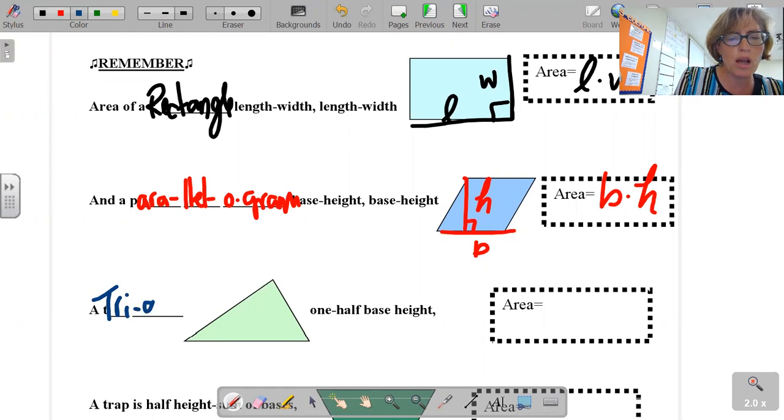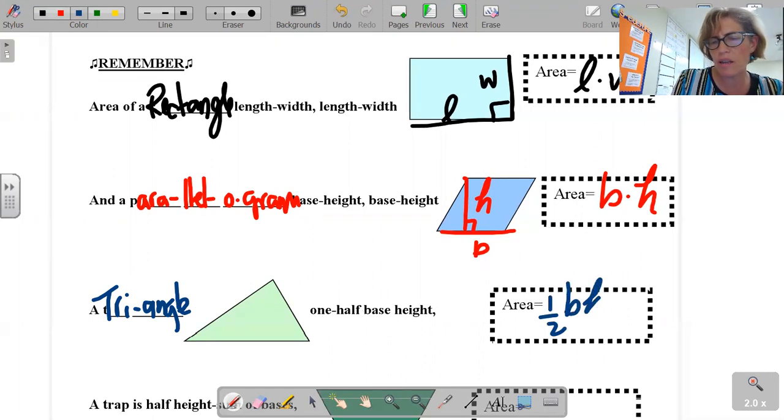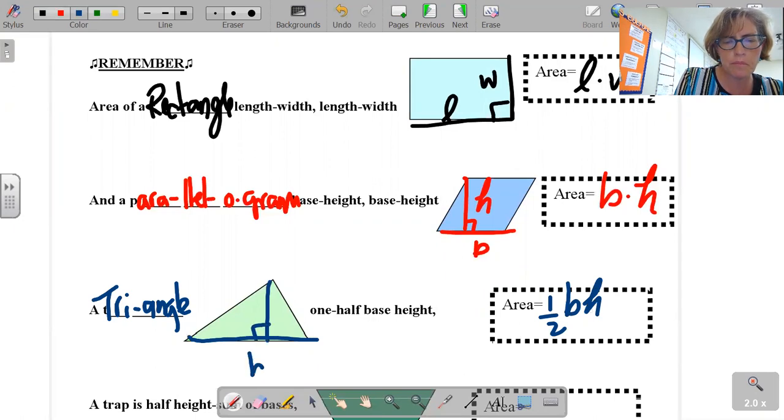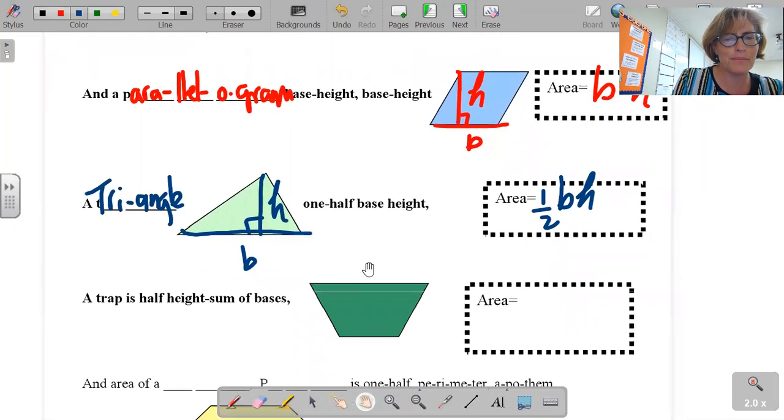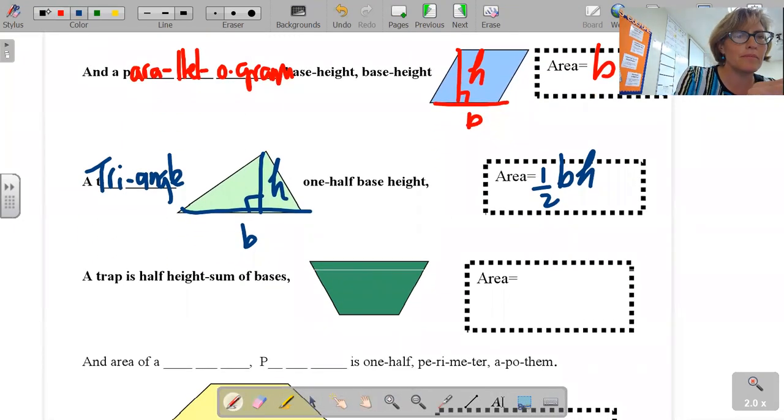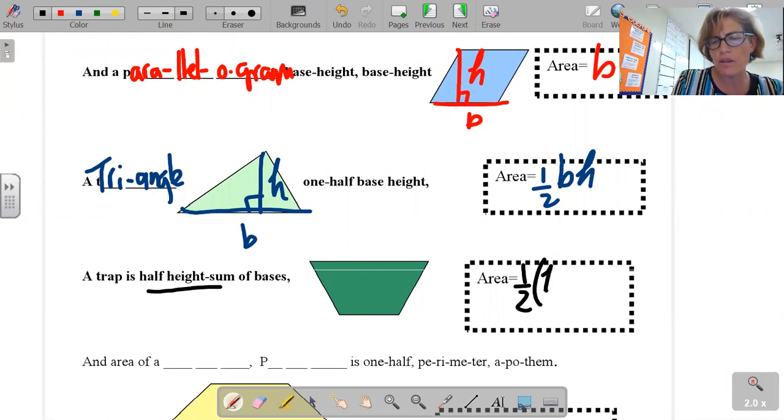A triangle: one-half base times height. A trapezoid is one-half height times sum of bases.